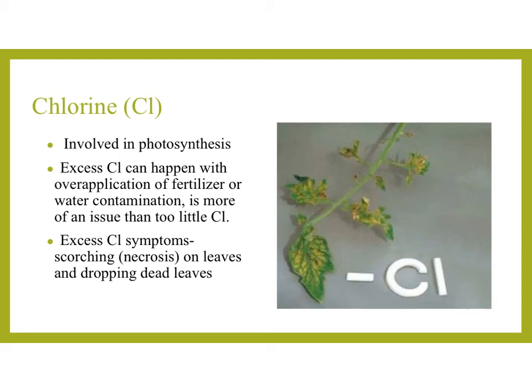Chlorine is a trace element involved in photosynthesis. Excess chlorine can happen when there's an over-application of fertilizer or water contamination, and that excess is more often the issue than having too little chlorine. For example, people with pools can end up damaging surrounding plants because of the chlorine in the pool. Excess chlorine symptoms include scorching — a necrosis on the leaves — and the dropping of those dead leaves.